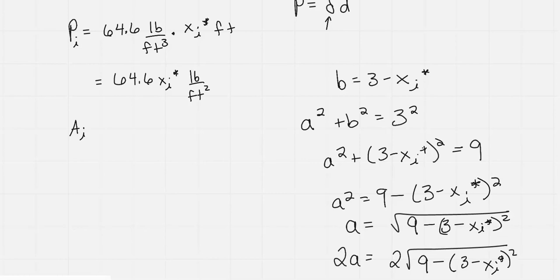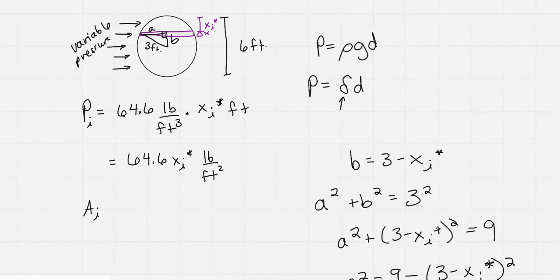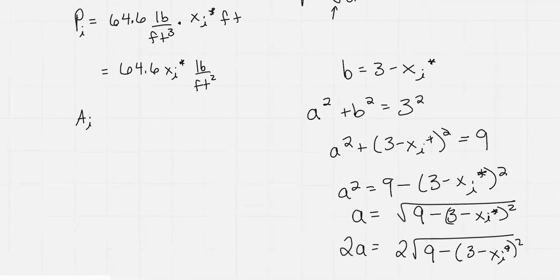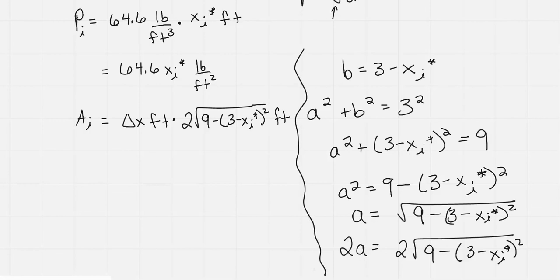The area of that little purple rectangle would be my thickness of delta x and the width 2A. This would be delta x feet times 2 times the square root of 9 minus (3 minus x sub i star) squared, and that's also in feet. My area is in square feet.